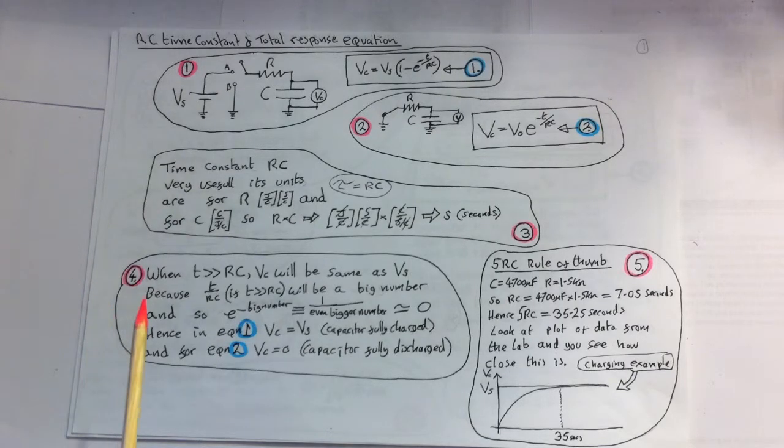If we look at the data, if you collected any from the last lab, you should see a very close match with this 5RC rule. Let's have a quick look and see what we got. The capacitor we used was 4,700 microfarad, and the resistor was 1.5 kilo-ohms.